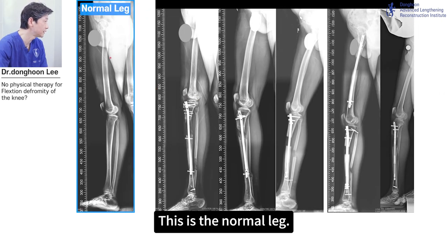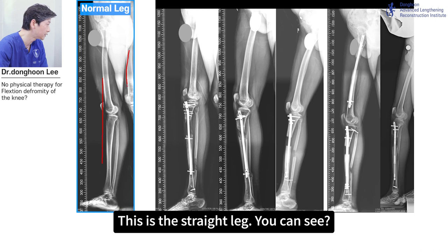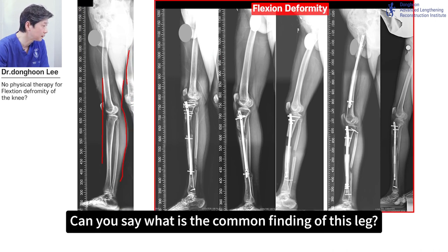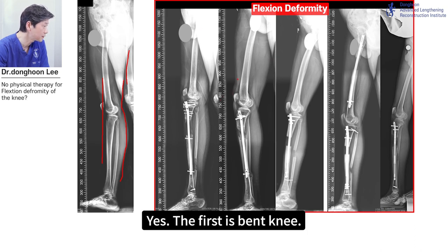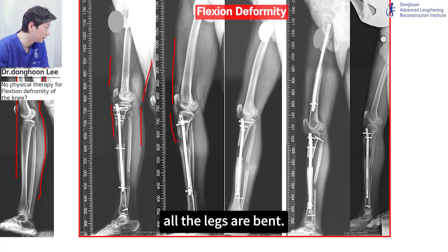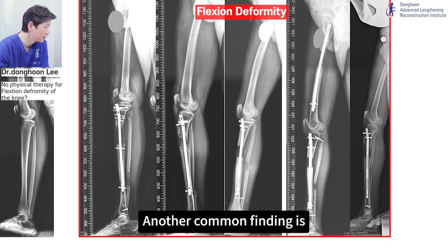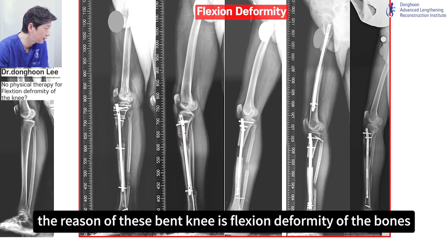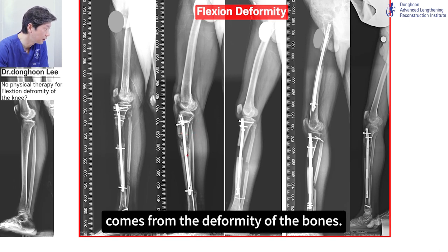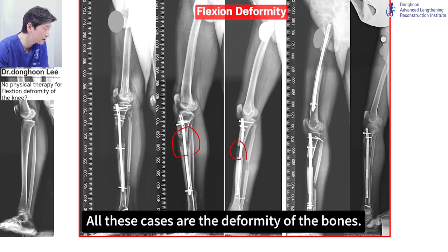I will show you this. This is a normal leg — this is a straight leg, you can see the leg is very straightened. Can you say what is the common finding of these legs? Yes, the first is bent knee. If you see the soft tissue shadows, all the legs are bent. Another common finding is that the reason for this bent knee is flexion deformity of the bones.